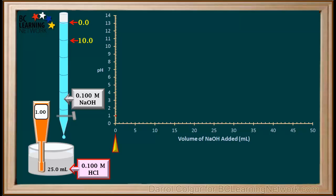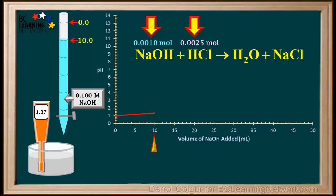Now we'll open the stopcock and slowly add 10 milliliters of NaOH to the beaker. As a result, the pH rose to 1.37. When 10 milliliters of 0.1 molar NaOH is added to 25 milliliters of 0.1 molar HCl, we've added 0.001 moles of NaOH to 0.0025 moles of HCl. So the acid HCl is in excess, which explains why the pH is still quite low at this point.